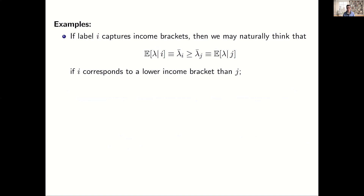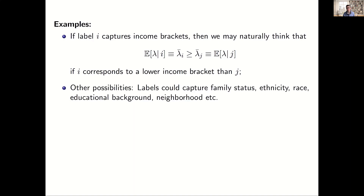Labels can reveal something about welfare weights. Suppose we care more about poor agents and have income data — two labels i and j corresponding to different income brackets. It's natural to say the average weight on agents with a lower income bracket label is higher than for a higher income bracket label. These labels could also capture family status, ethnicity, educational background, neighborhood, etc. — commonly used criteria in social and public programs.